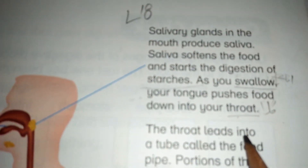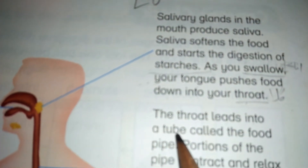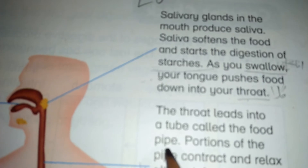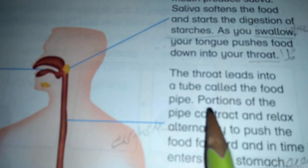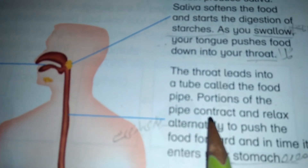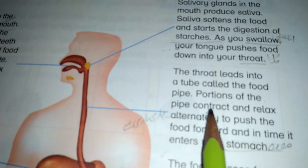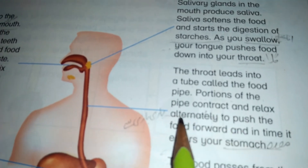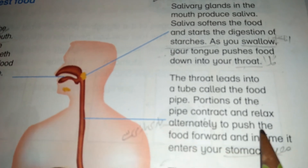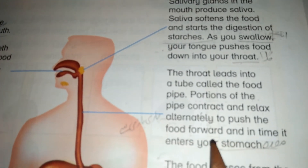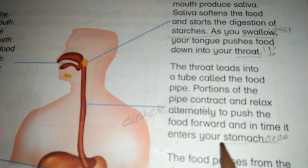The throat leads into a tube called the food pipe. Portions of the pipe contract and relax alternately to push the food forward, and in time it enters your stomach.